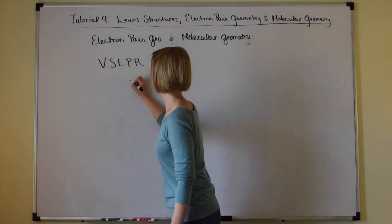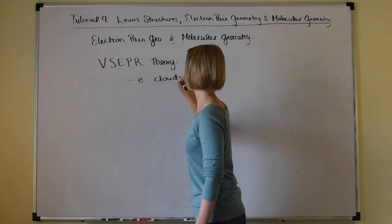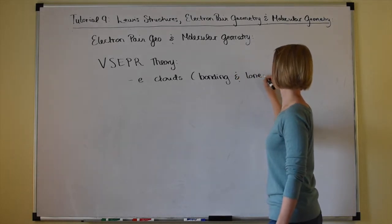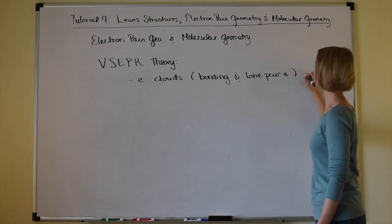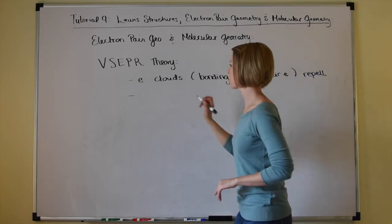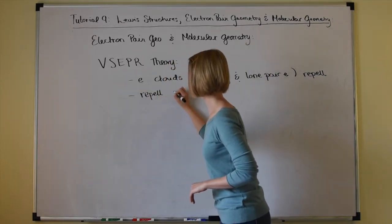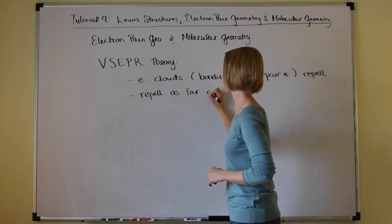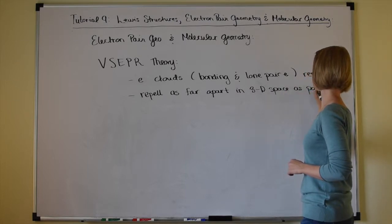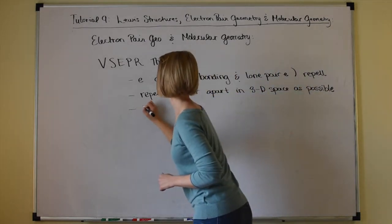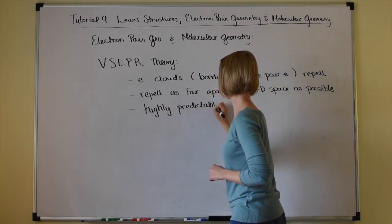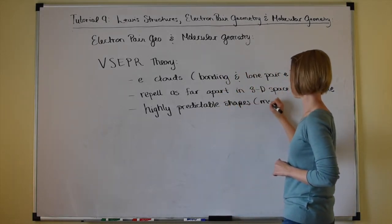Electron clouds — which include both bonding electrons and lone pairs — repel one another. They're full of negative electrons and like charge repels. They will place themselves as far apart as possible in three-dimensional space, and this leads to highly predictable shapes, or what we call molecular geometries.